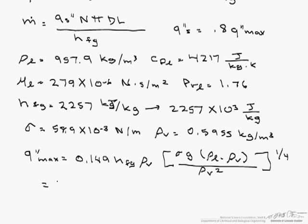When we calculate that out, we get 1.26 times 10 to the sixth watts per meter squared. So our q, or our heat flux, is 1.008 times 10 to the sixth watts per meter squared.